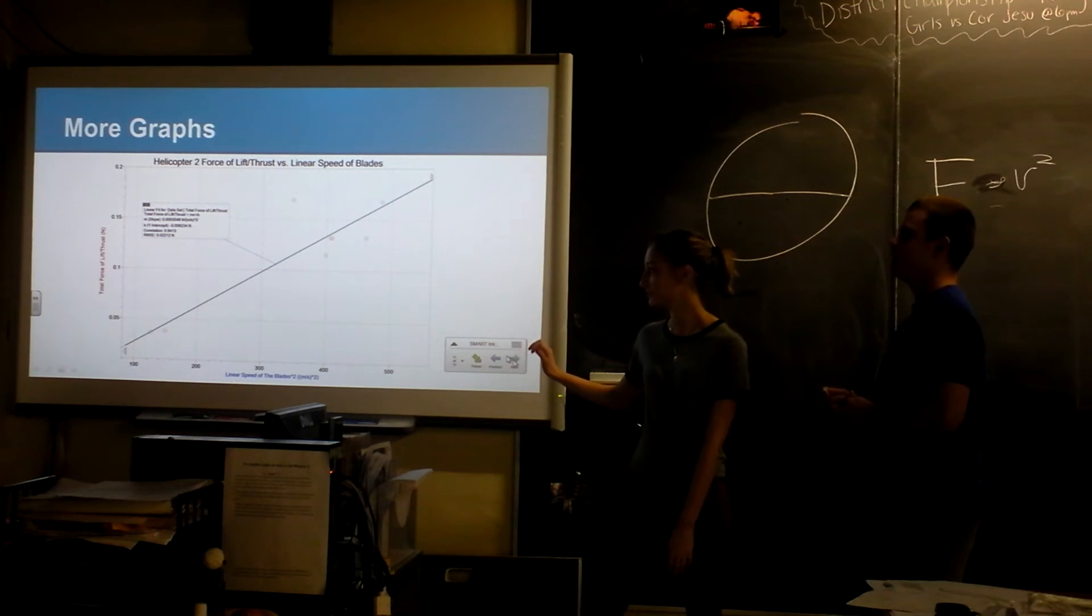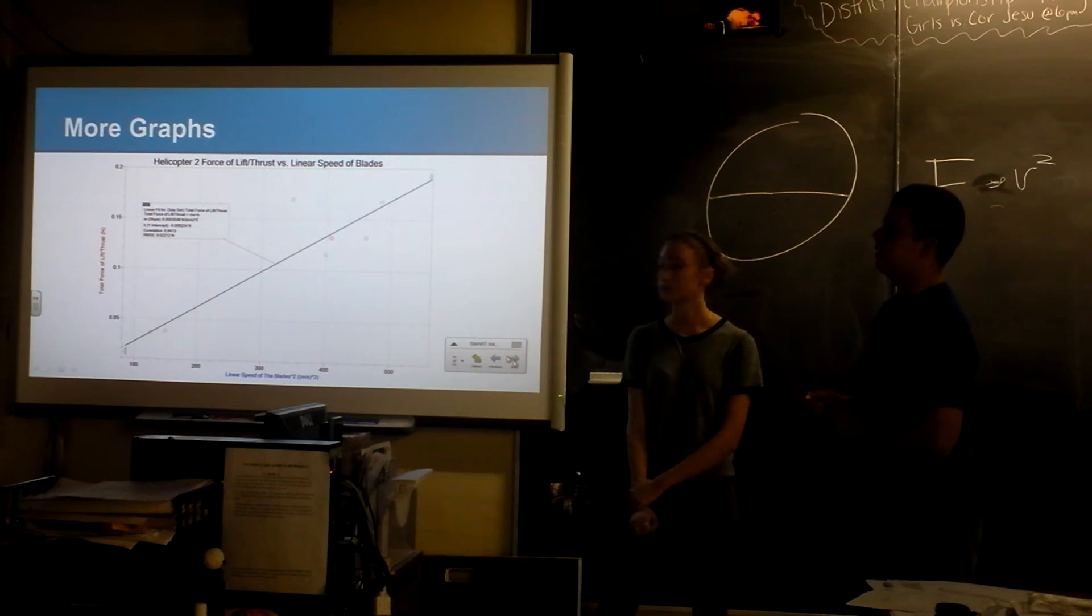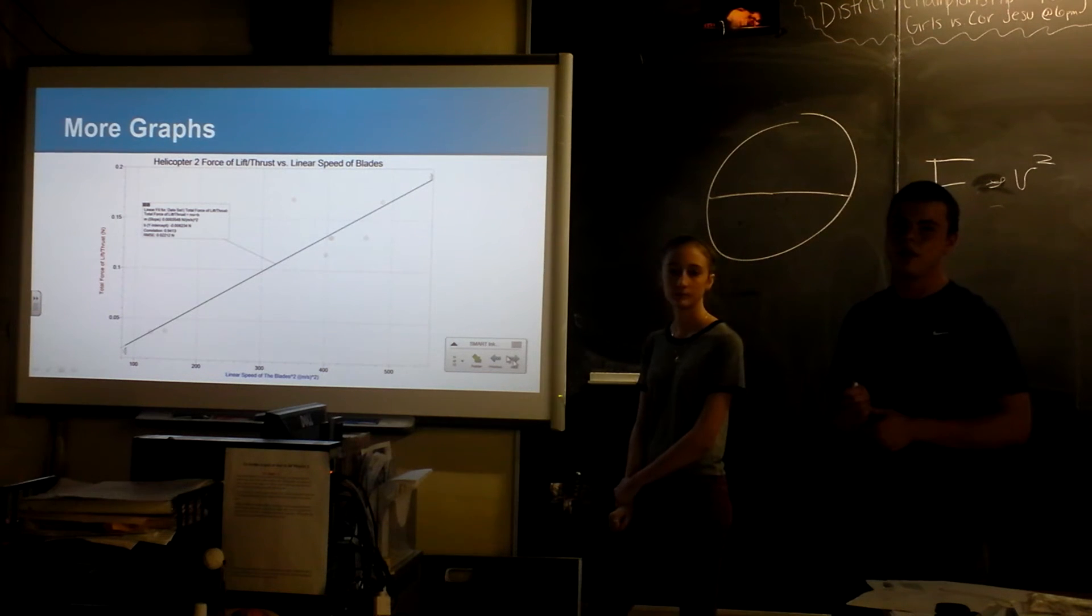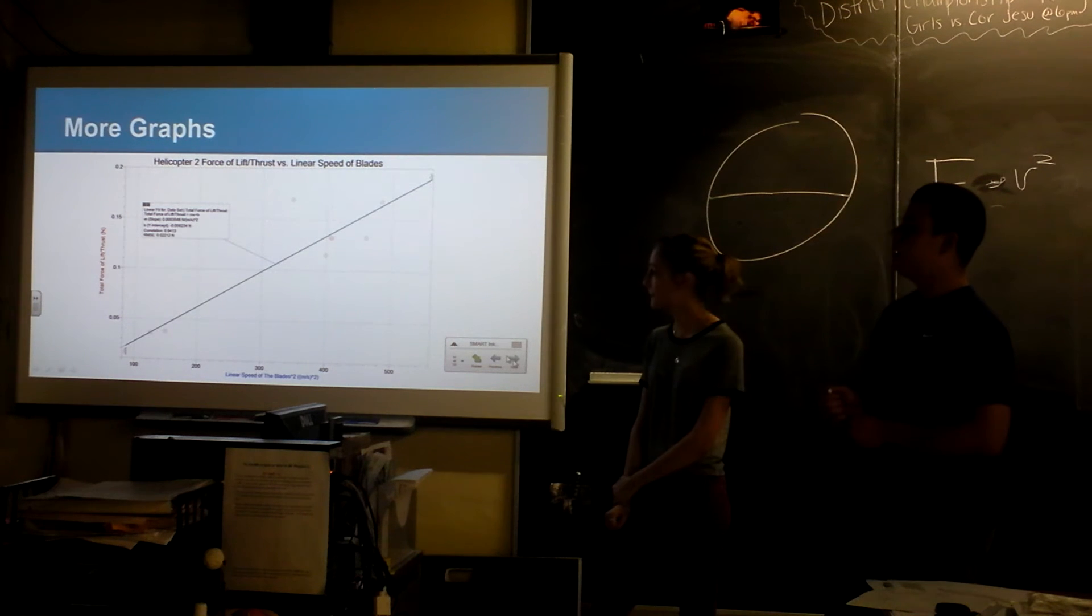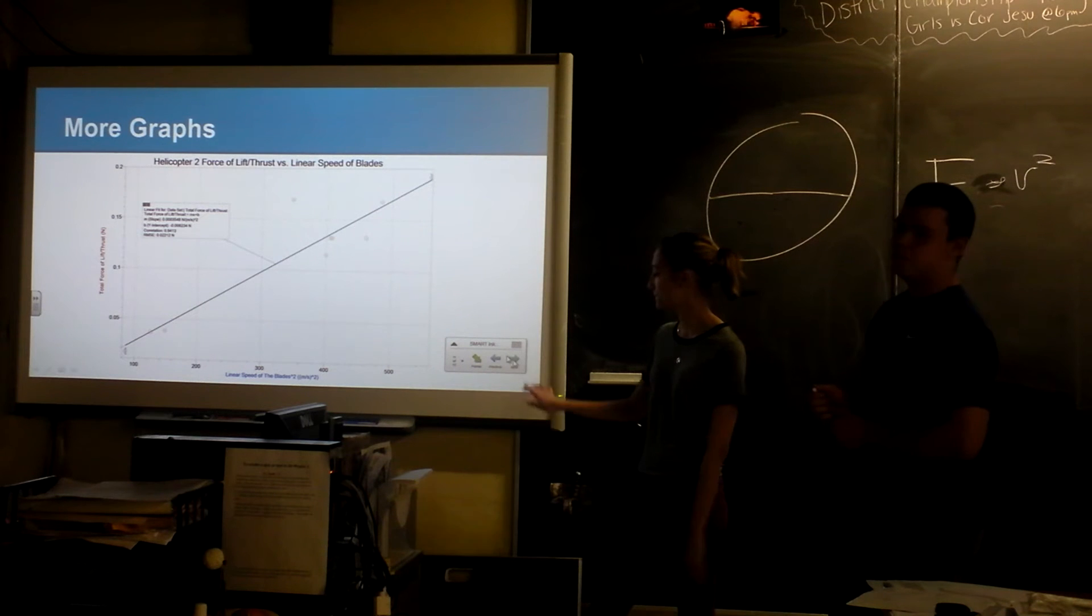And this is the second helicopter graph. It's not as linear. There's one outlying point. We're not really sure about that. That probably has to do with a balance issue. But it's still pretty linear.